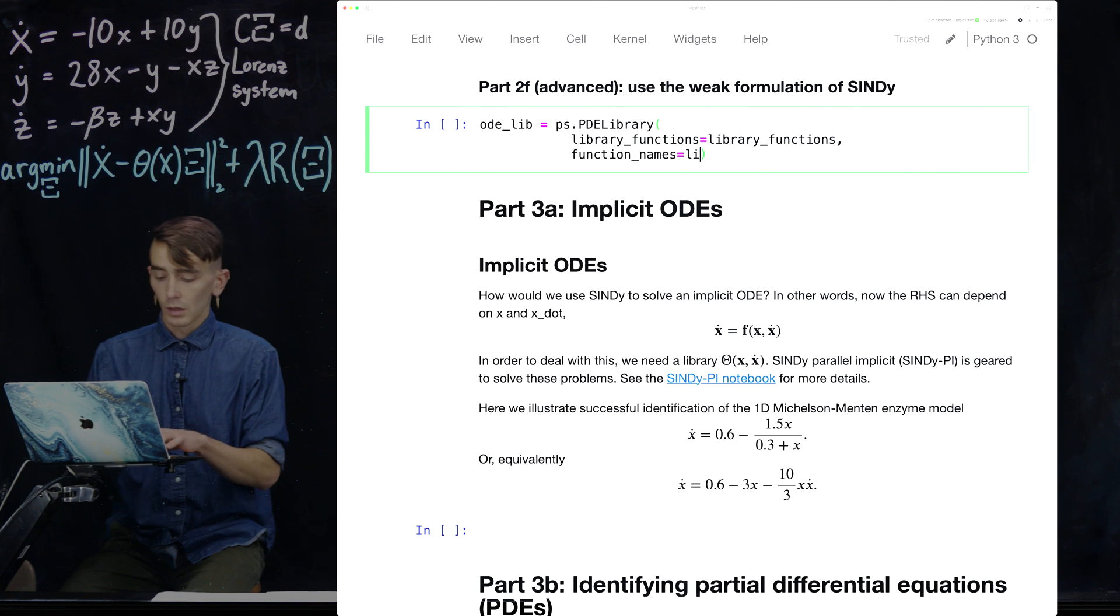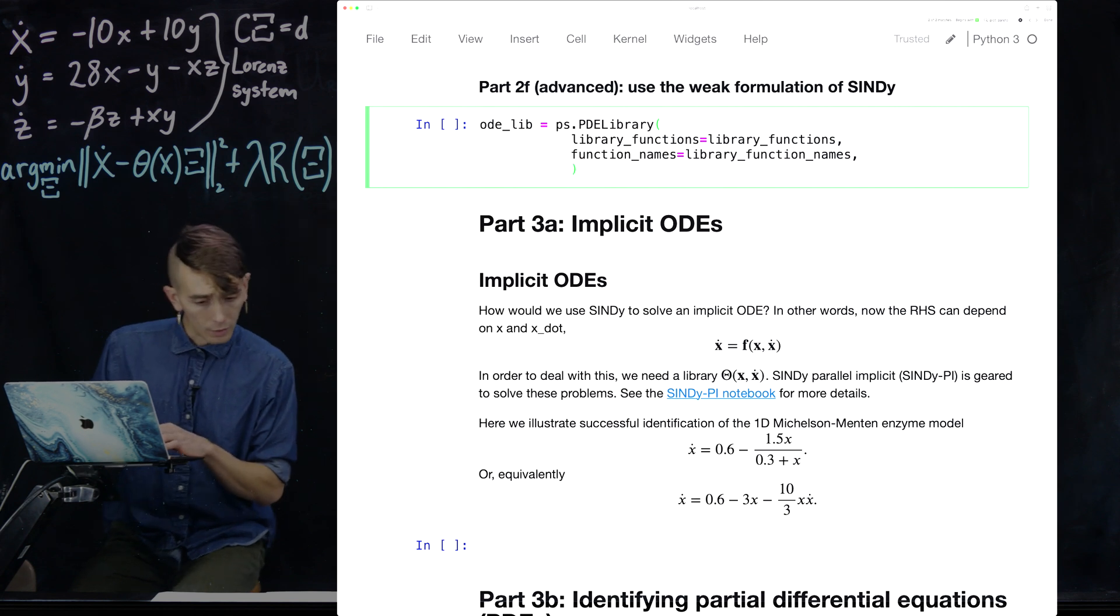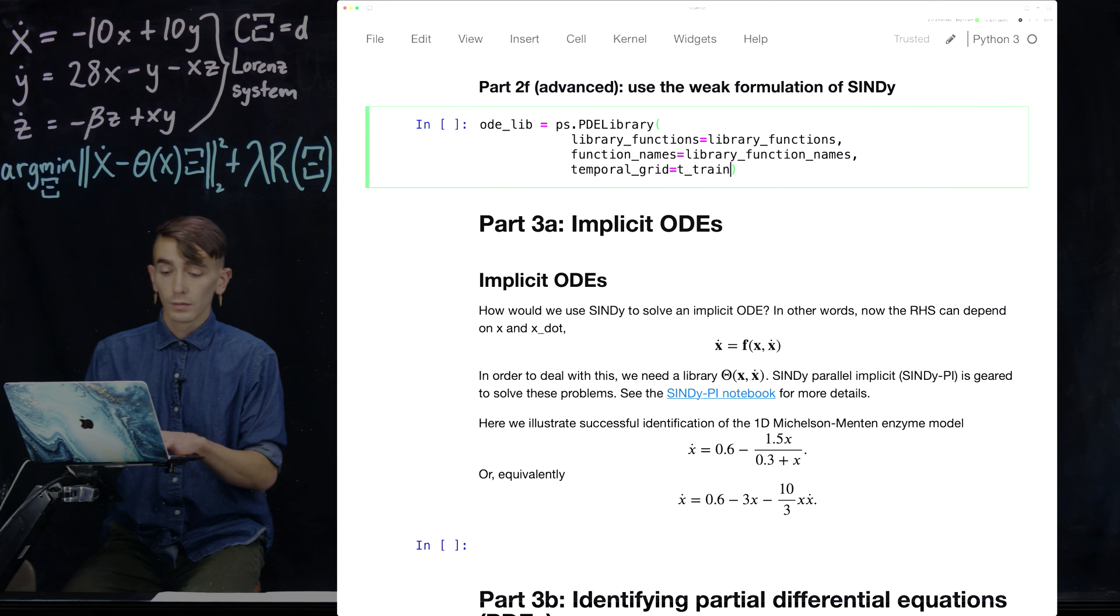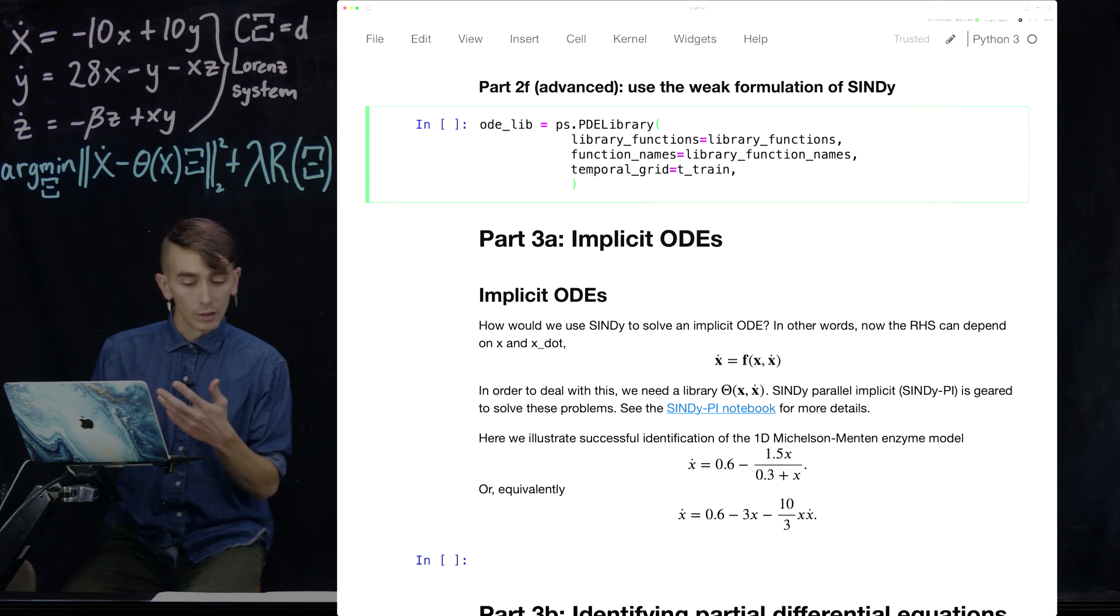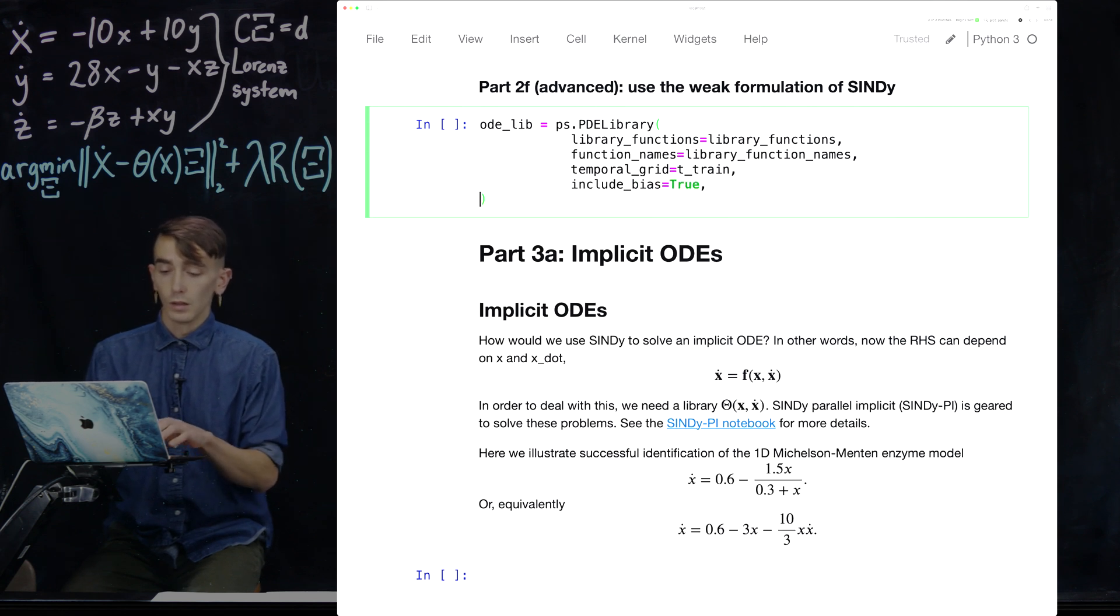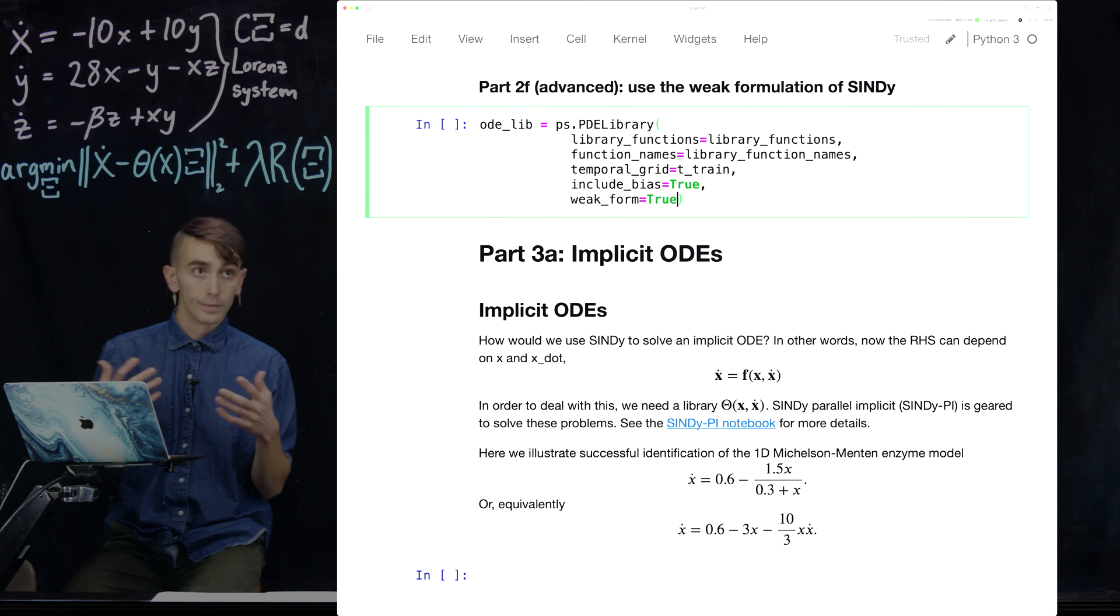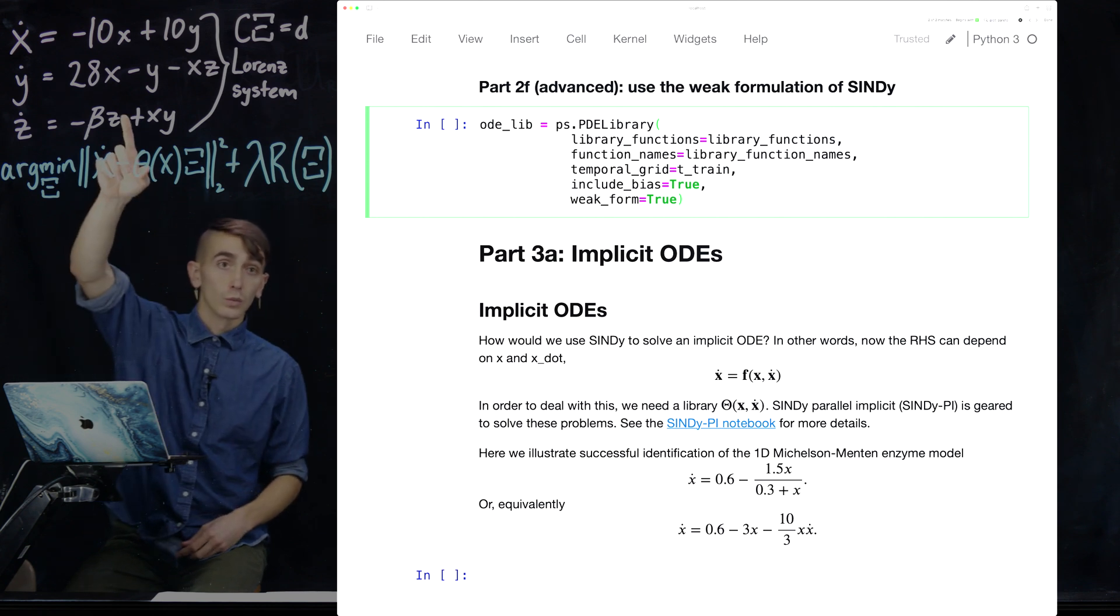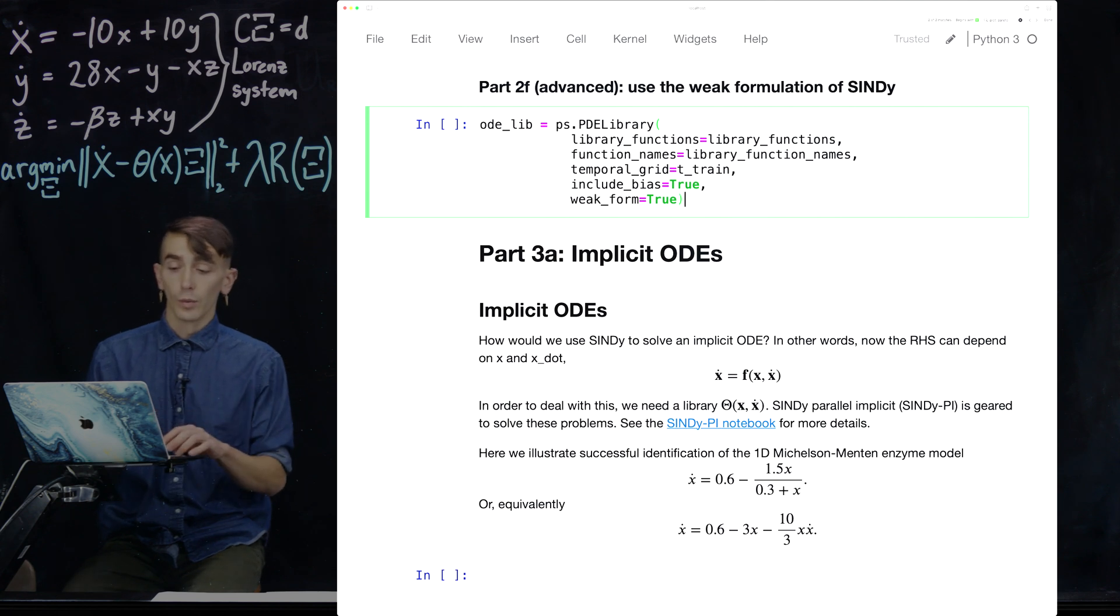So, function names equals library function names. We need to give it a temporal grid. I know this is not super clear right now, but I'll explain in a moment. We're gonna say, include a constant term in the candidate library. And then, we're gonna say, use the weak form. So, there's this flag weak form, and we set it to true. In general, this PDE library we would use for PDE data, but if we don't pass a spatial grid, it'll just be used as a normal custom library. And what's nice about this, is it has this extra parameter weak form that allows us to use the weak formulation of Cindy. So, we're just gonna use a custom library of quadratic terms in X, Y, and Z, and ask it to use the weak formulation. So, that's our library.